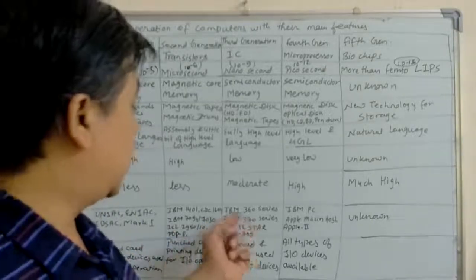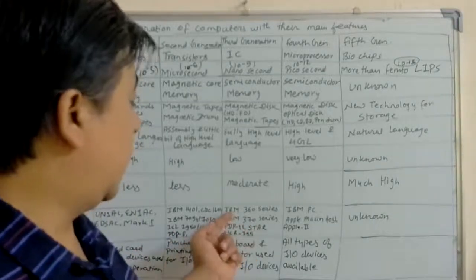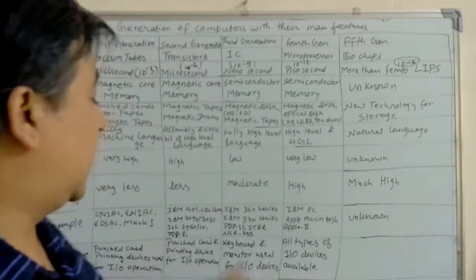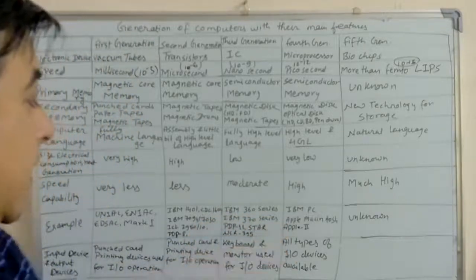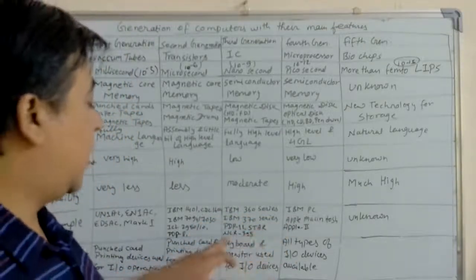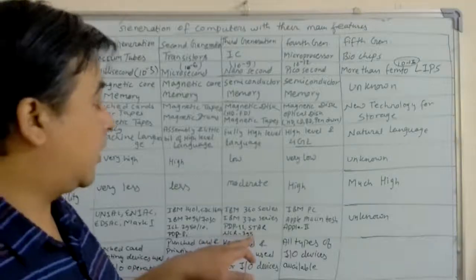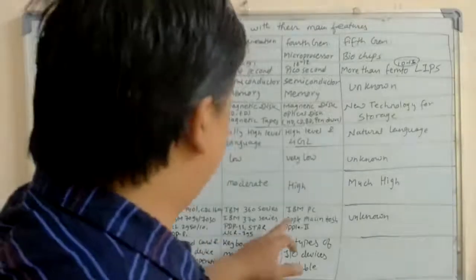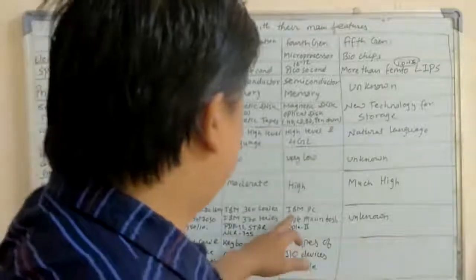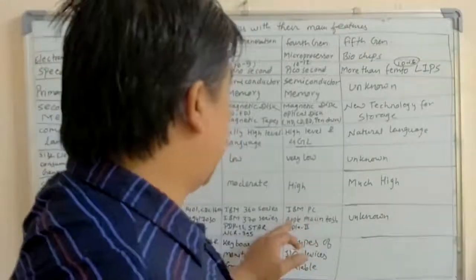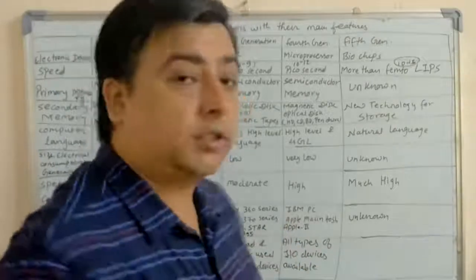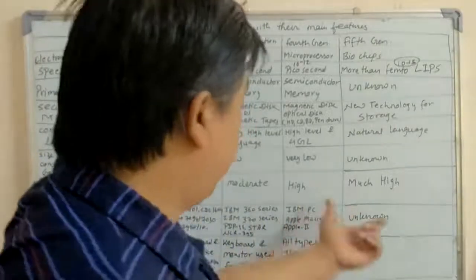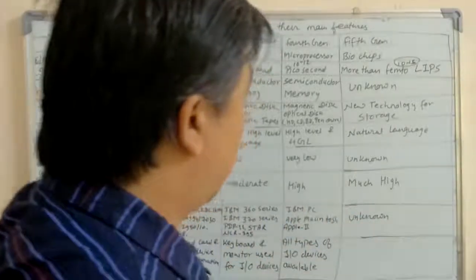Third generation examples: IBM 360 series, IBM 370 series, PDP 11, ESTRAD, and NCR 395. Fourth generation examples: IBM PC, Apple Macintosh, and Apple II. Fifth generation examples are unknown.